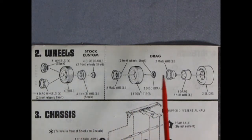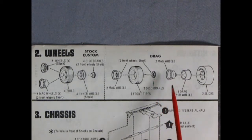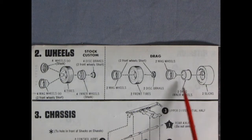Along the back we have the drag wheel and tire combination, which has two disc brakes in the front, the front tires, and two mag wheels. And in the back we've got the deep dish mag wheels, the drag wheel inners, and two slicks.